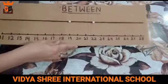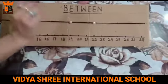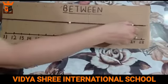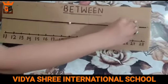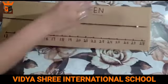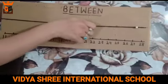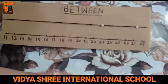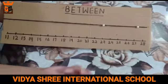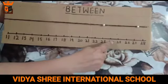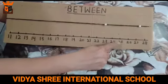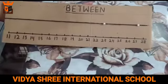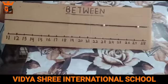Let's do one more. I am going to place this on number 27 and this one on number 23. So which all numbers are coming in between? 24, 25, and 26. Very good.